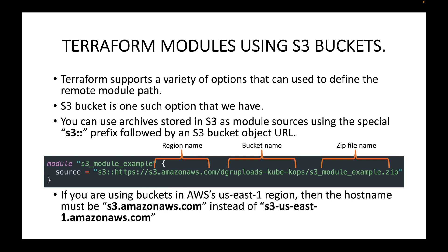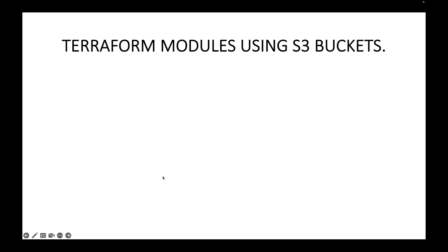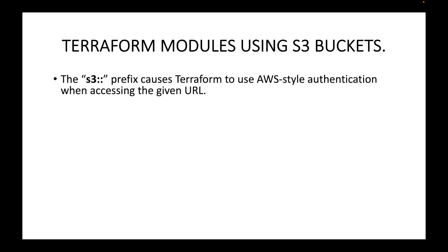If you are using buckets in the AWS US East 1 region, the hostname must be `s3.amazonaws.com` instead of `s3-us-east-1.amazonaws.com`. Depending on the region you are using, this region name will change. In my case I'm using the US East 1 region, so we use `s3.amazonaws.com`.